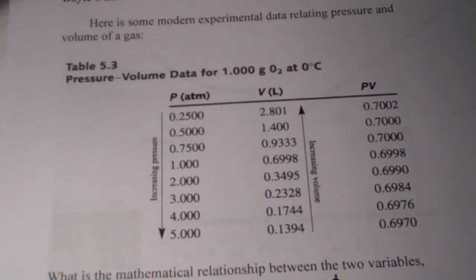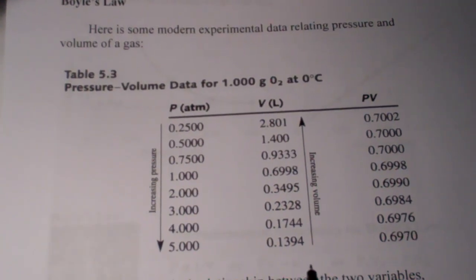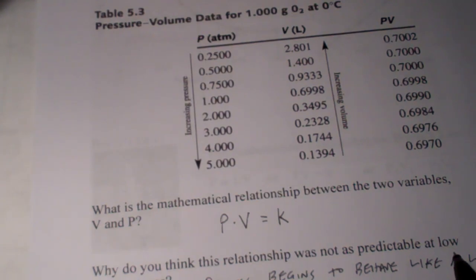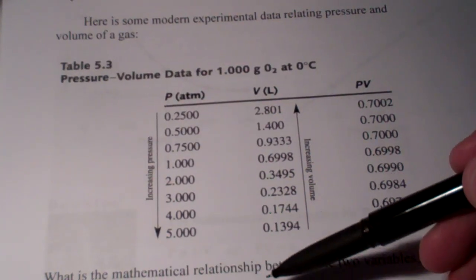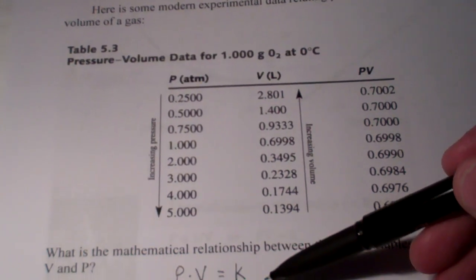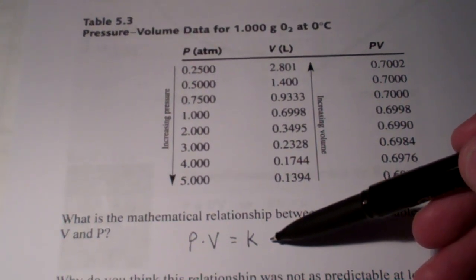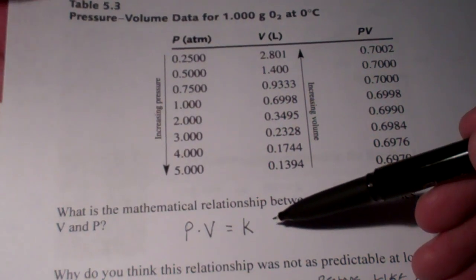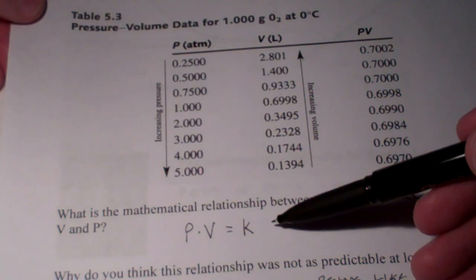Now, what we will be dealing with in this chapter are ideal gases. So, we disregard very, very low temperatures and very, very high pressures. We pretend that the gases follow this principle perfectly. In reality, they don't, but we treat them as ideal gases. For the most part, at room conditions, they behave like we like them to.